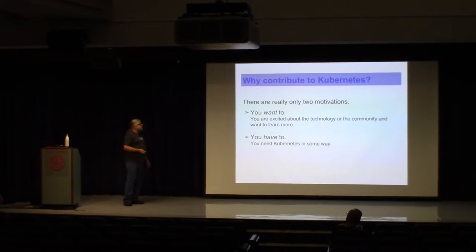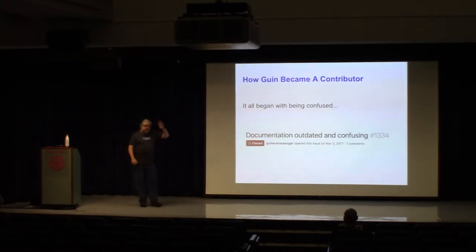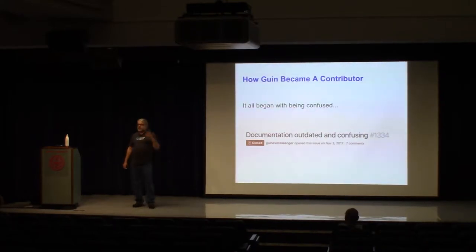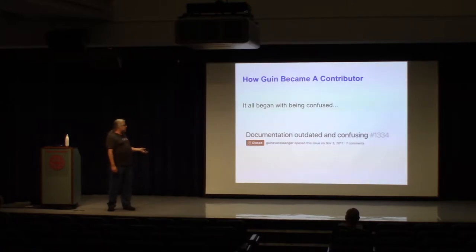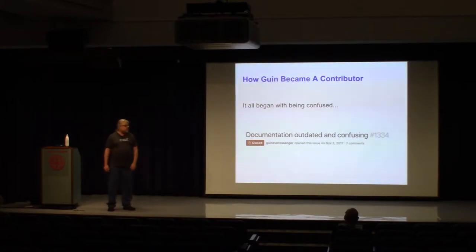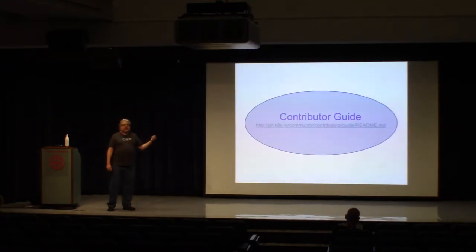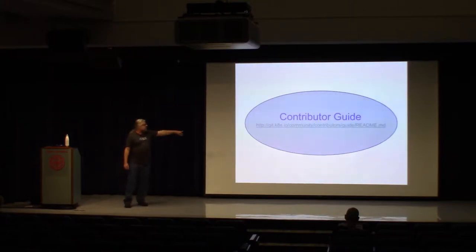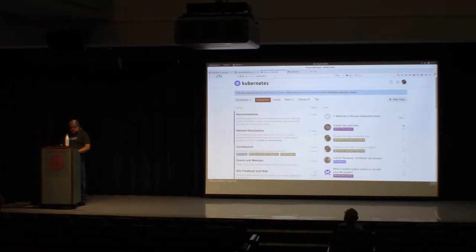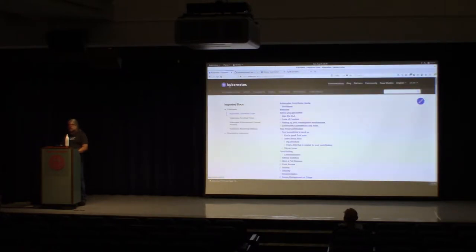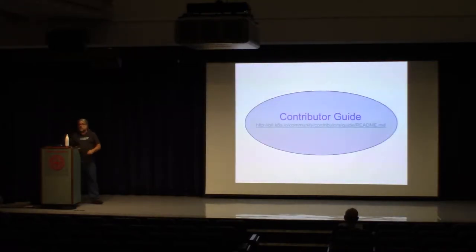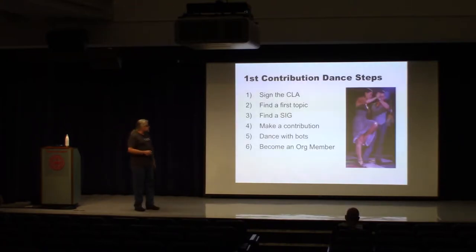I put together the new contributor workshop with Guinevere Sanger, who also gives it at some KubeCons. She got involved only late last year and started by jumping on GitHub and filing an issue saying our contributor documentation was horribly out of date and completely disorganized. Three months later she was the lead author for our contributor guide — kubernetes.io/community/contributors/guide/readme — which covers in text form a lot of the material I'm about to go over. This can happen to you too.